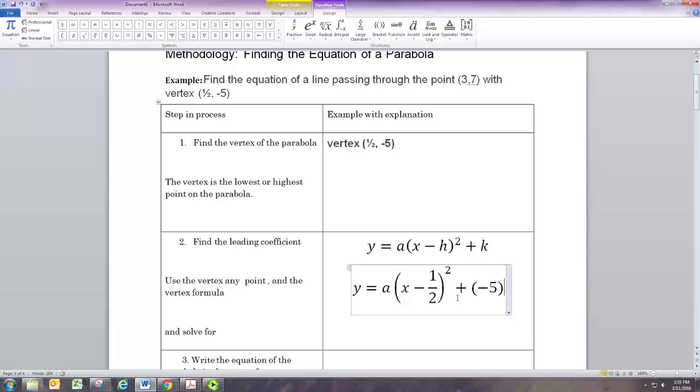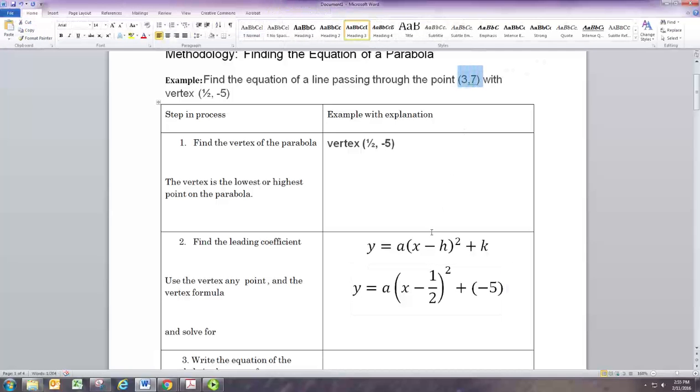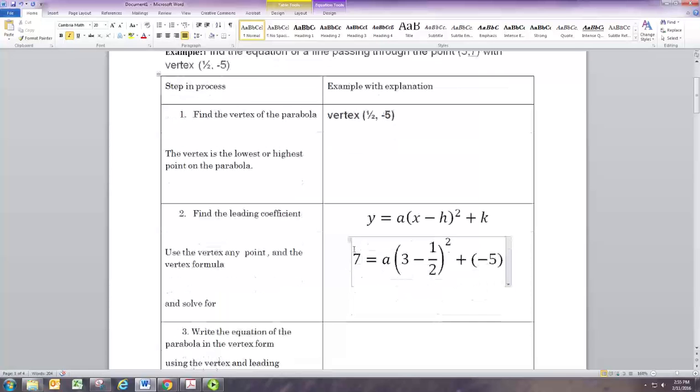We need another point on the parabola to use for x and y, and we're going to use the point given (3, 7). So x is 3 and y is 7. Now we have an equation with one unknown, that is a, the leading coefficient. So solve this for a.